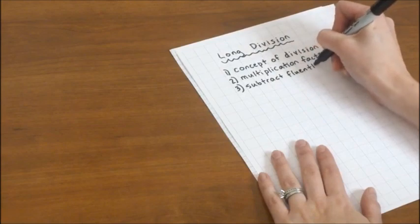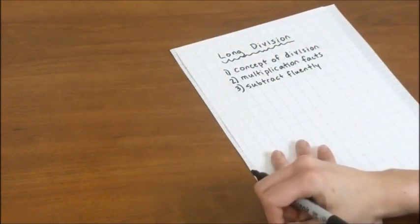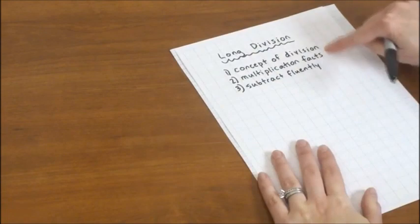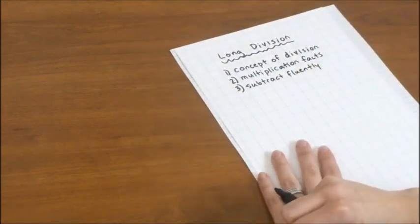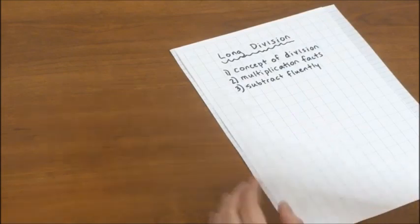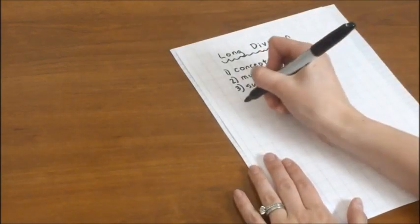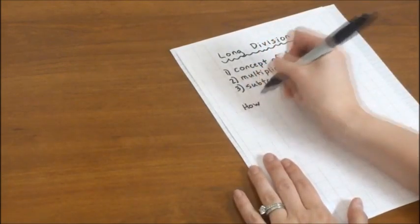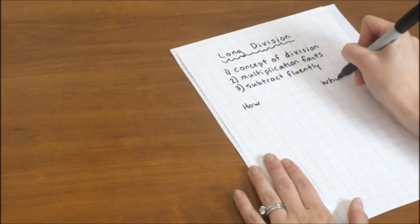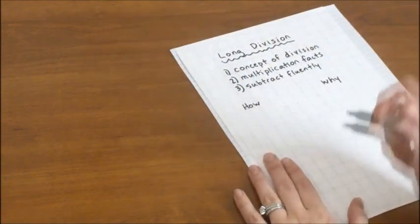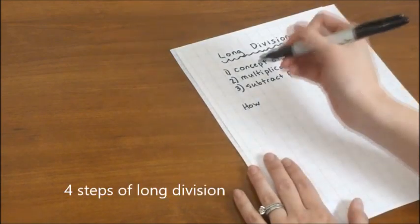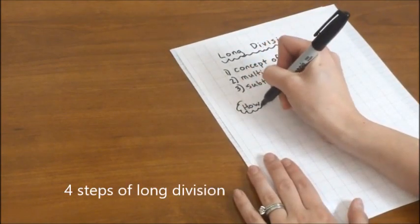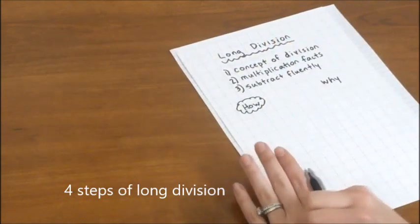Our brains only have so much working memory. They can only hold so many things in them at a time. And if they're devoting a lot of their working memory to any of these three things, the whole process of long division is going to be very difficult. So today I'm going to show you both how to do long division and also why the long division algorithm works. First I'm just going to walk you through the usual algorithm. It might have been a while since you've studied it yourself. And then we'll explore why it works with a hands-on way.